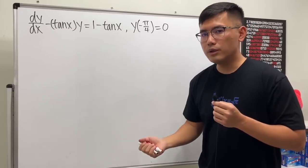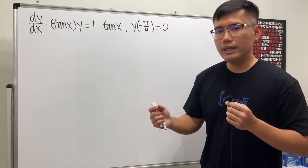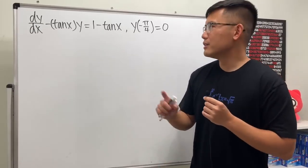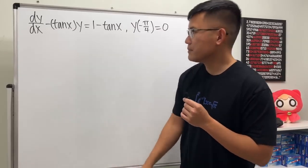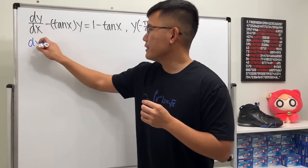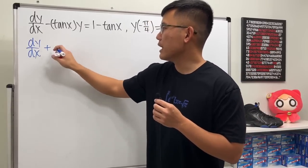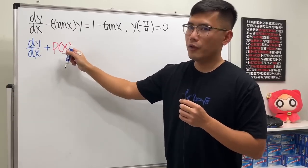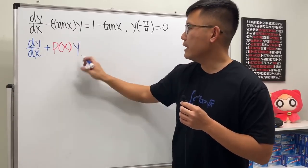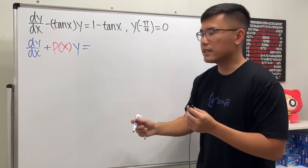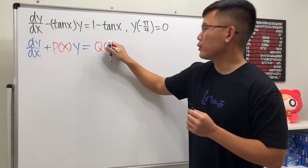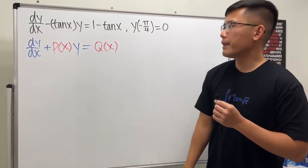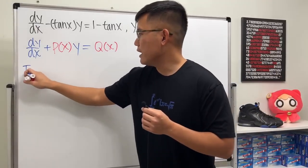The way we handle this is using the so-called integrating factor — I have a video on that already. We must have the equation in standard form: dy/dx plus some function p(x) multiplied by y, with everything else in terms of x on the right-hand side. Notice the right-hand side does not have y, so it fits this category.